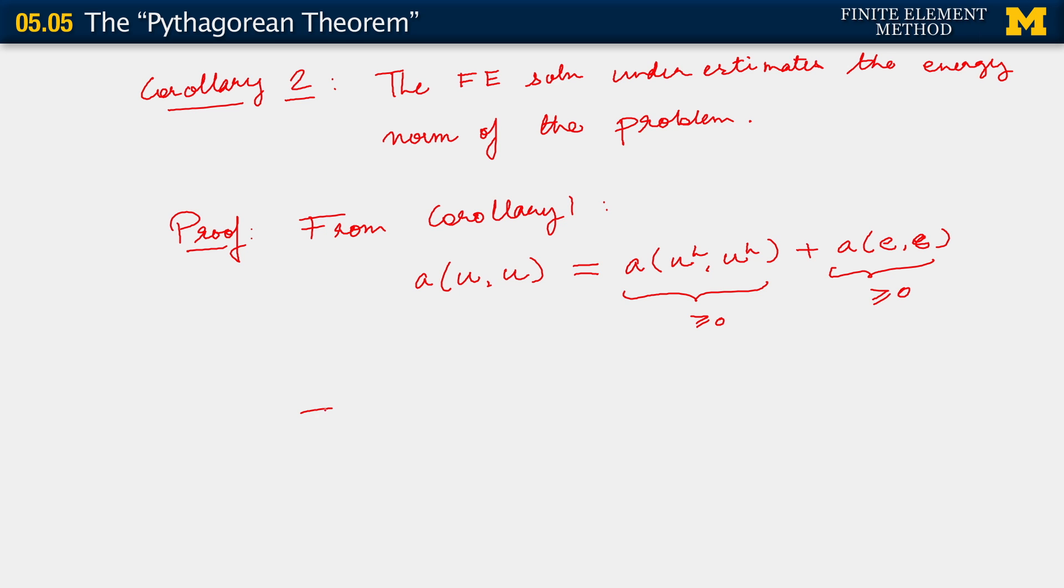What this implies for us then is that if we drop the last term, what we get for the right-hand side is that a(u_h, u_h), the energy norm of the finite element solution, is lesser than or equal to the energy norm of the exact solution. And this is what we mean by saying that the finite element solution, u_h, underestimates the energy norm of the problem. The exact energy norm of the problem is what we have on the right-hand side here. When we get the finite element solution and we go back and compute the energy norm, which is what we have on the left-hand side, we will be computing an energy norm which is less than that of the exact solution.